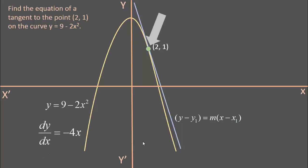Then its first derivative is dy/dx = -4x. -4x is the slope of the curve.